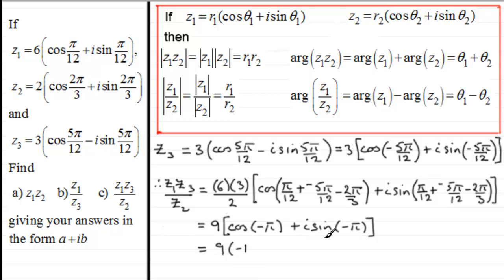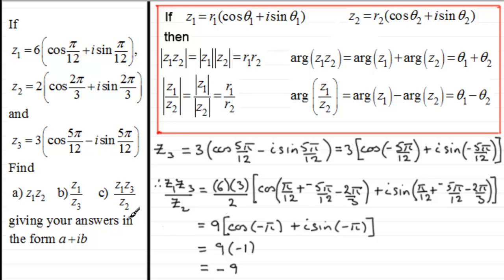The argument simplifies to −π, and sin(−π) = 0, so we have just a real value: 9·cos(−π) = 9·(−1) = −9. I hope that gives you a clear idea across all three questions and provides enough to tackle similar problems.